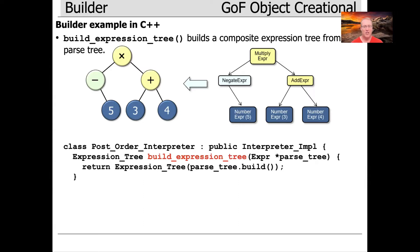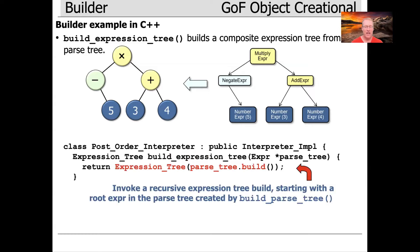and that means we are obliged to override the build expression tree method, which takes the root of the parse tree called parse_tree, which is a pointer to an expert. So that's the root of the tree. Then what happens is we say, parse_tree, please start building yourself.